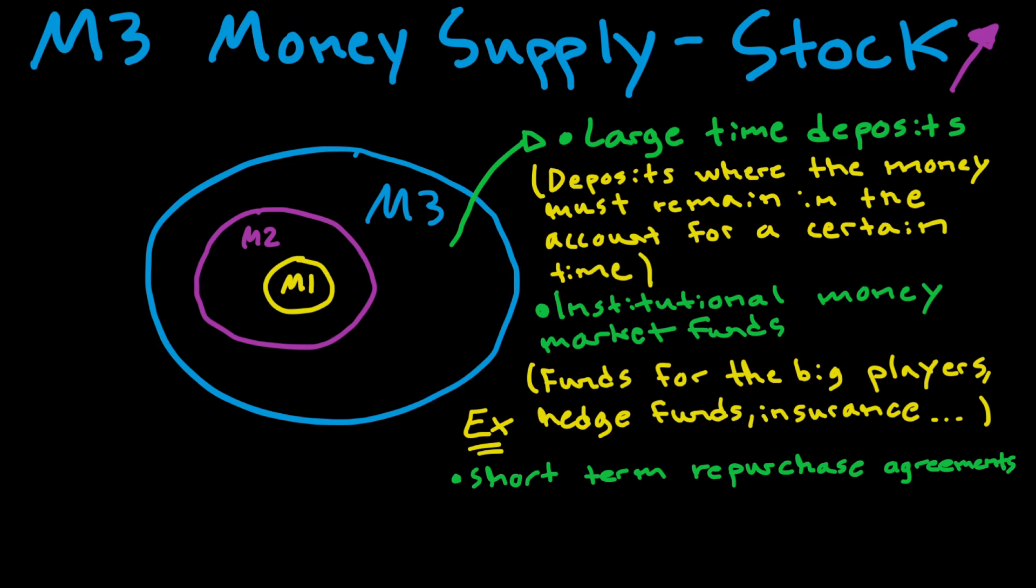And I think that one needs a video on its own, so I'm not going to go into that one a lot. And we can also include a category called other larger liquid assets. So this is basically the different types of M3 money that we don't find in the M2 or M1.